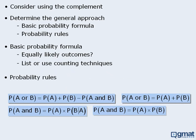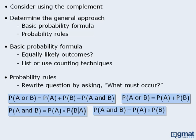If you decide to use one or more of the probability rules, it might be useful to first rewrite the question by asking, what must occur in order to achieve the target outcome? Rewriting the question will often help you determine whether you need to use AND probabilities or OR probabilities, or both.